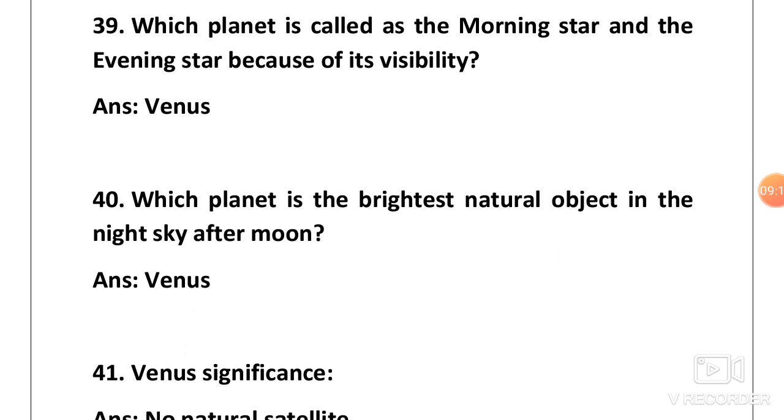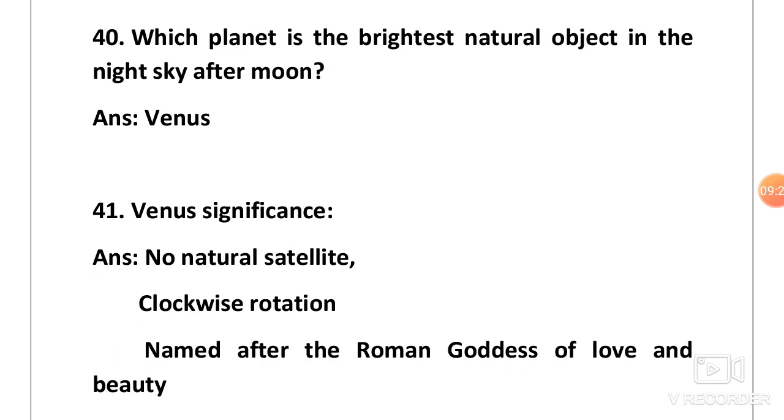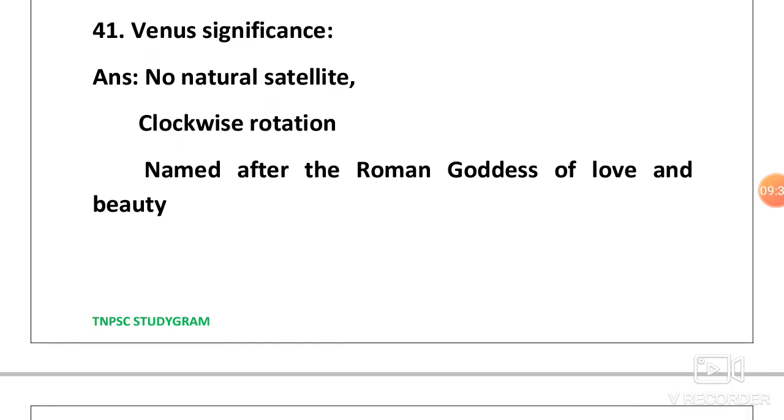Next one, which planet is called as the morning star and the evening star because of its frequent visibility? The answer is Venus. Next one, which planet is the brightest natural object in the sky after moon? That is next to moon, which one appears very bright in the sky is again Venus.